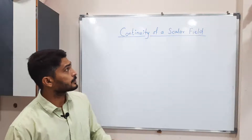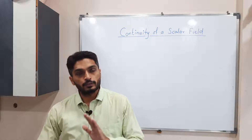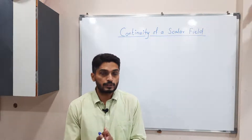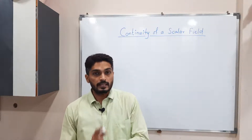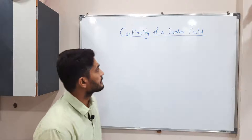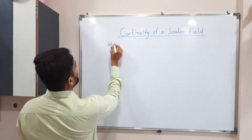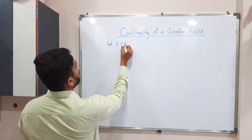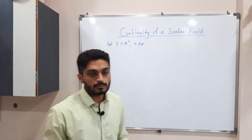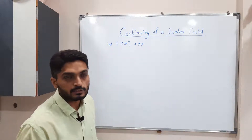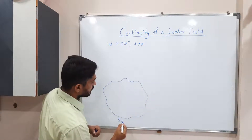Let us discuss the definition of continuity of a scalar field. We have already seen the definition of continuity for a real-valued function in first year of BSc, and we are going to extend that concept for a scalar field. We consider A as a subset of Rⁿ which is non-empty. I will draw the diagram simultaneously so we can easily understand.